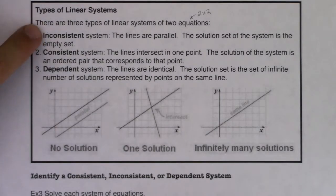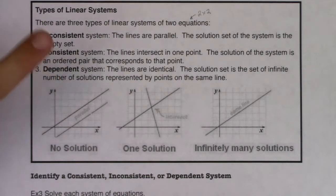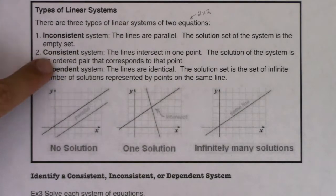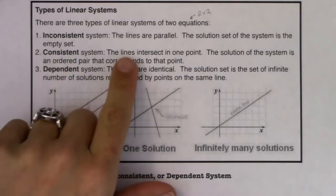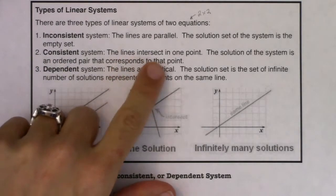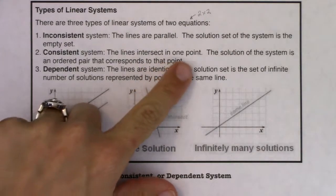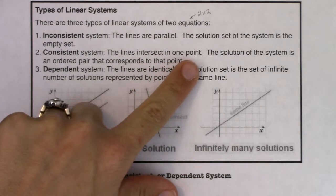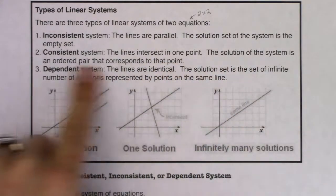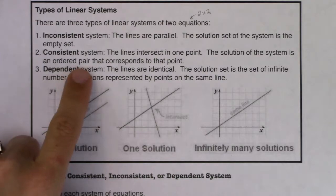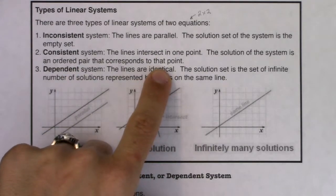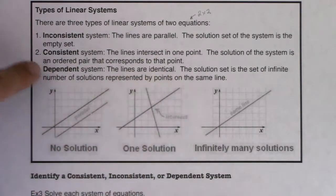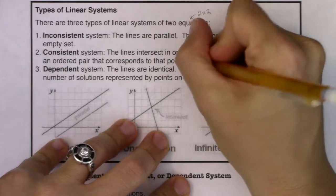And that's a little bit more rare — that doesn't happen as often. The consistent version, this is the one that happens the most often. Usually two lines intersect at one point. So in a consistent system, the lines intersect at one point. The solution of the system is an ordered pair that corresponds to that point. This is the most common option.